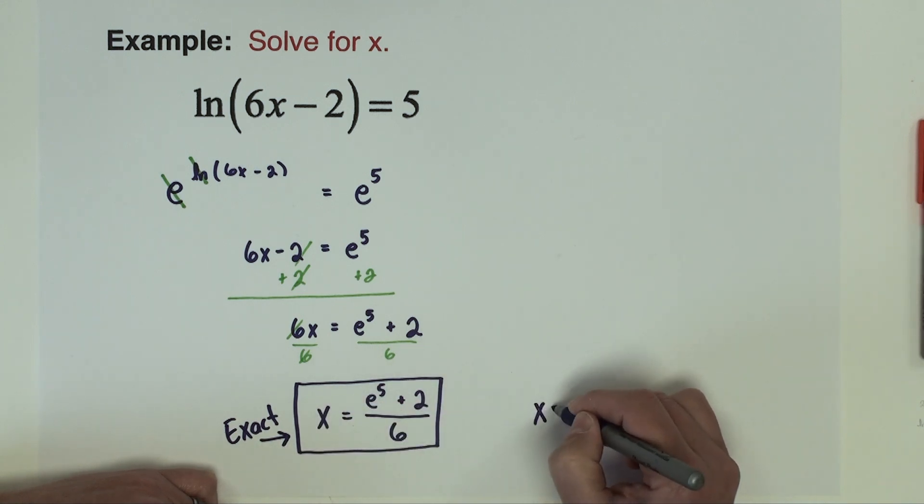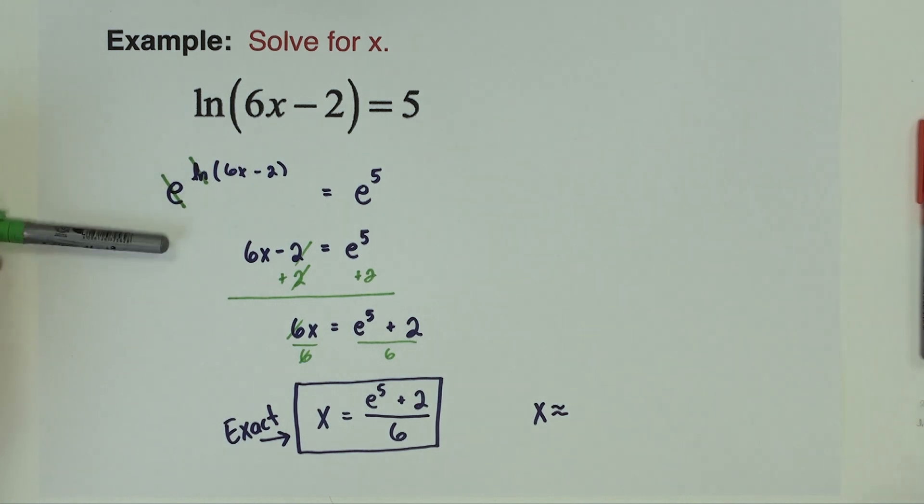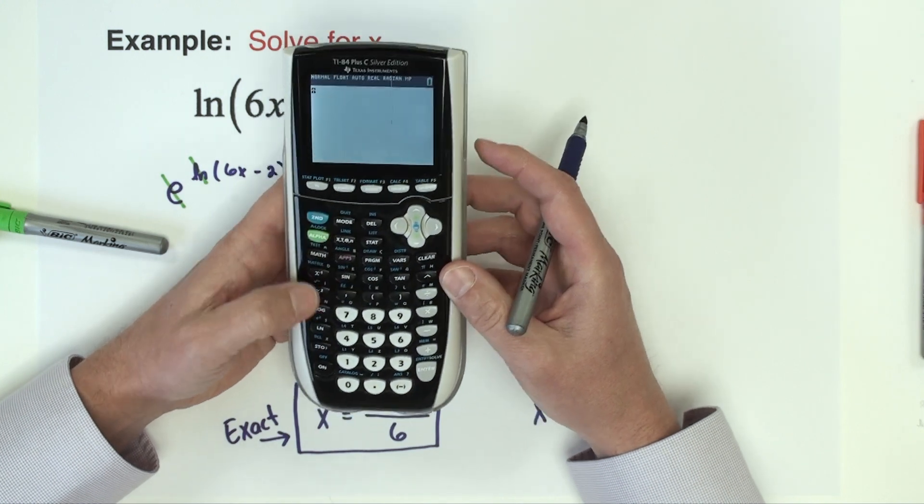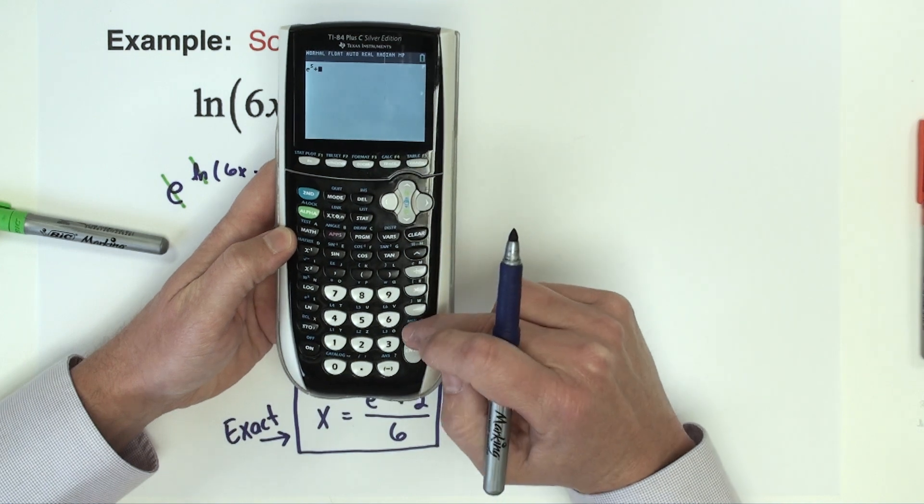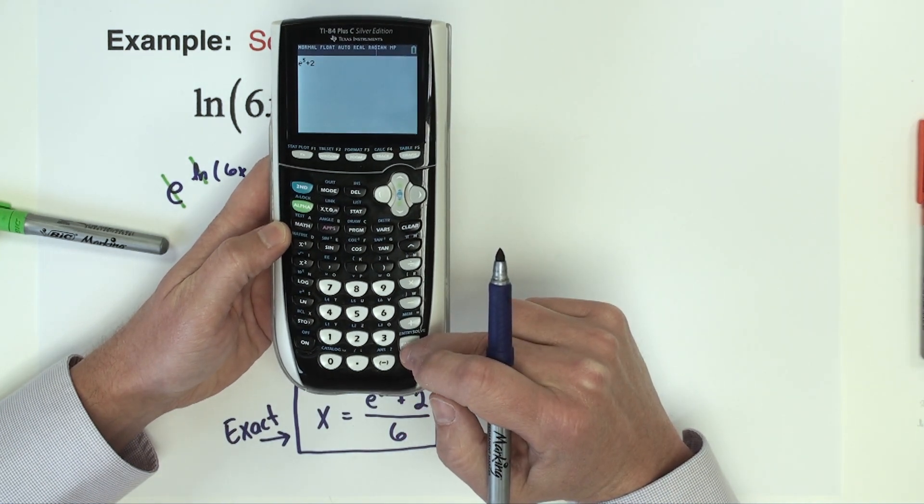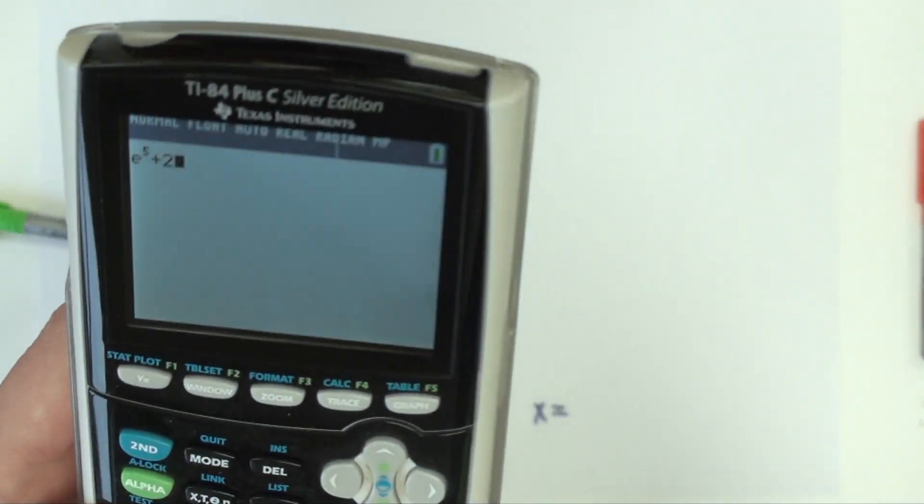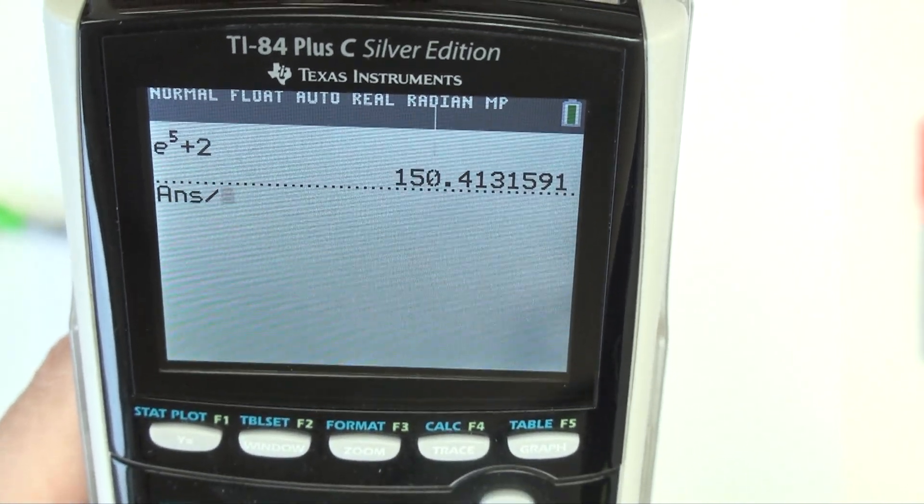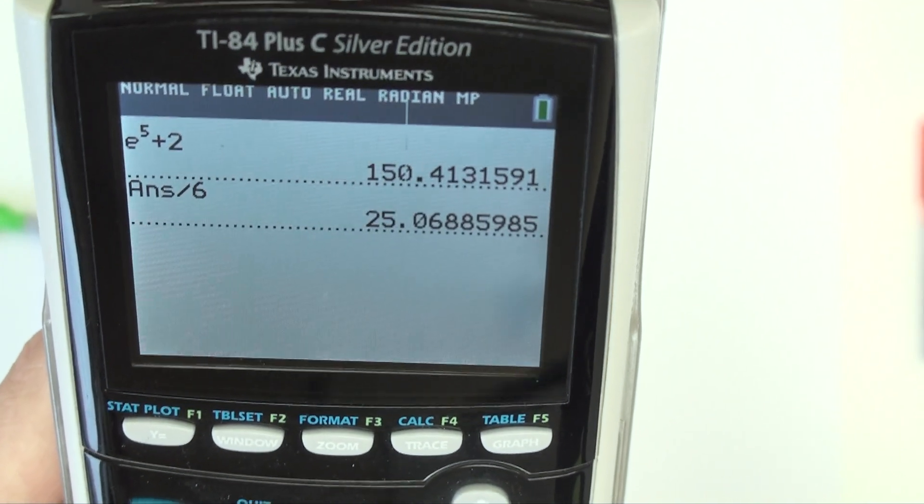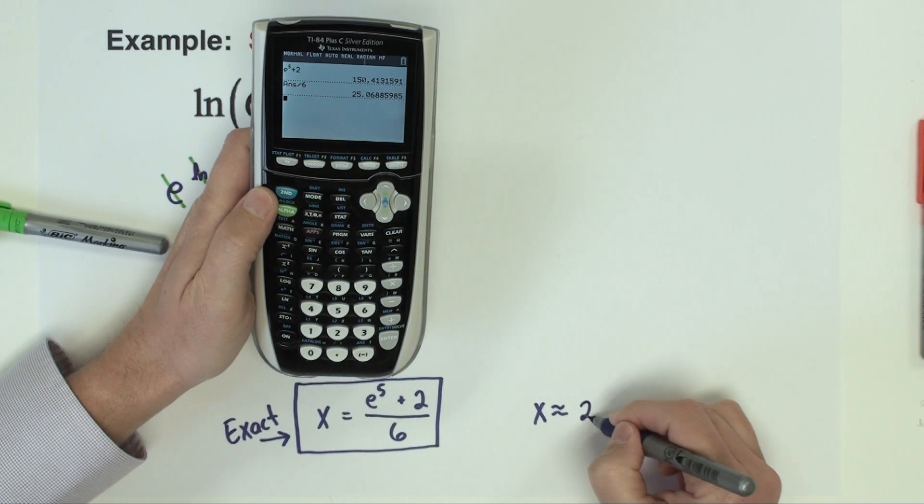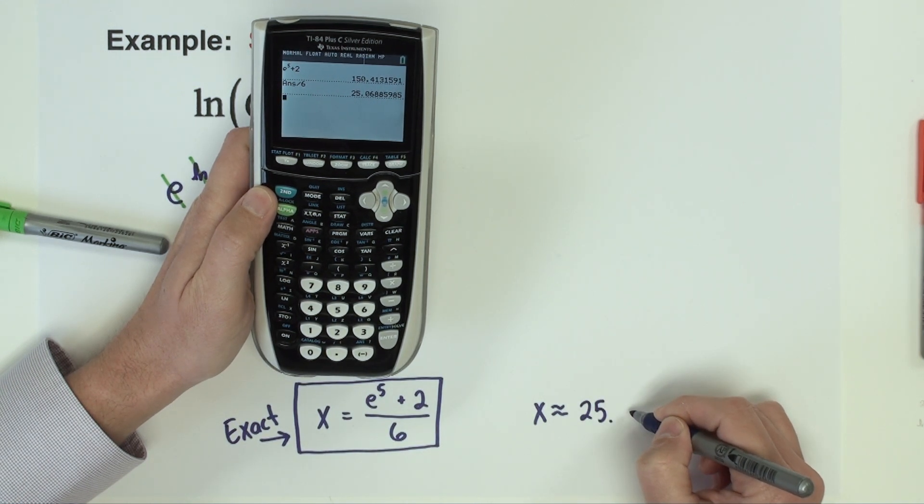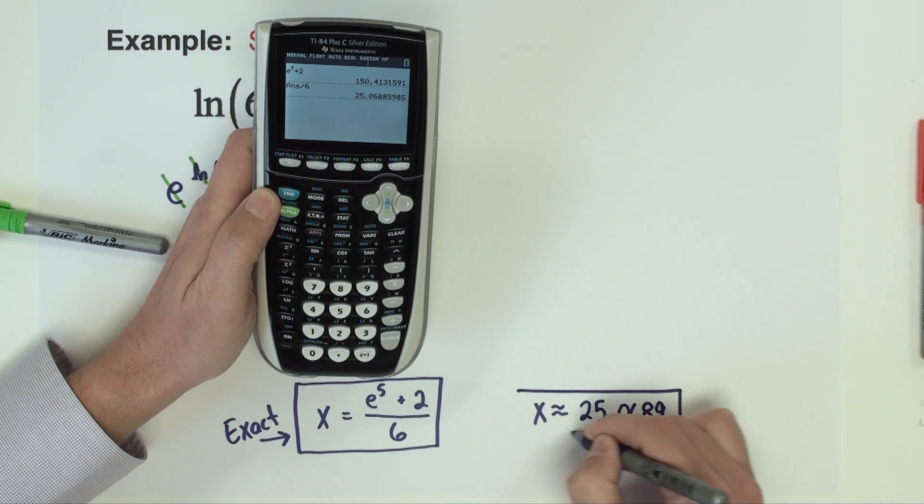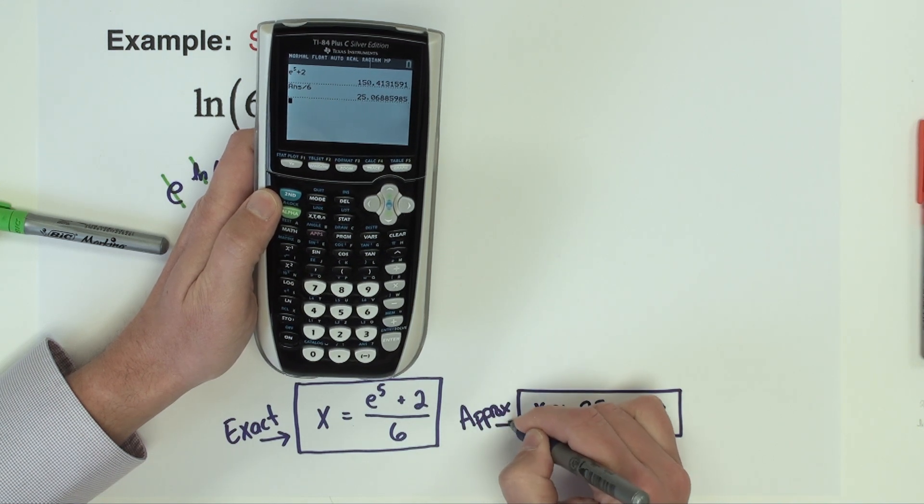If we want an approximate answer we're going to go to the calculator. So I'm going to type this in in steps. I'm going to do e. The e is above the natural log so I have to hit second natural log to get the e. I want it to the fifth power. I'm going to add 2. So my first step I just typed in the numerator e to the fifth power plus 2. And now I'm going to have to divide that by 6. And I'll use four decimal places. I get 25.0689. And that is my approximate answer.